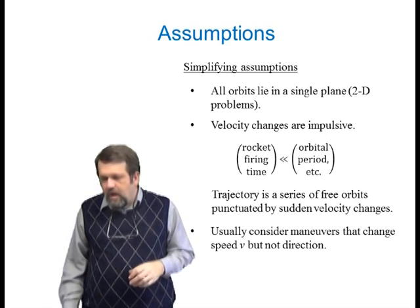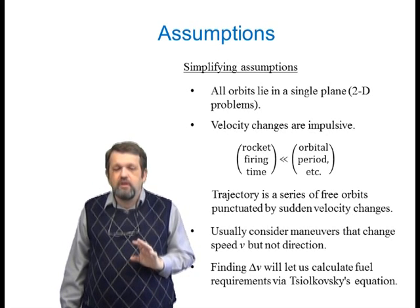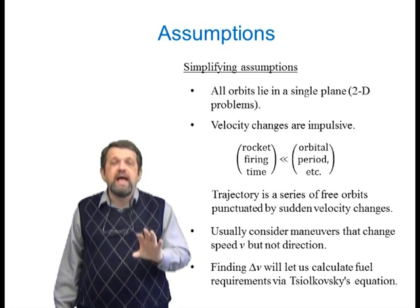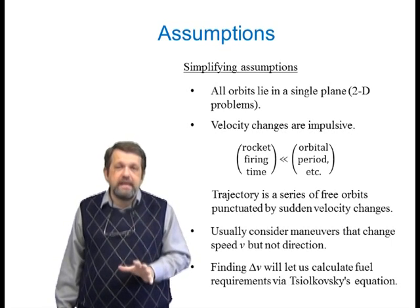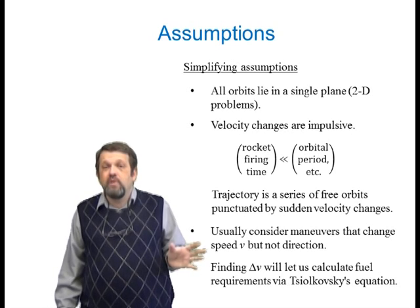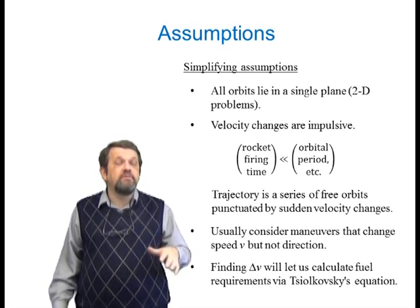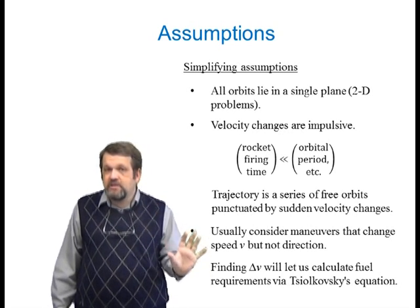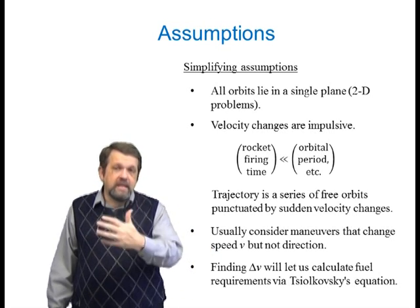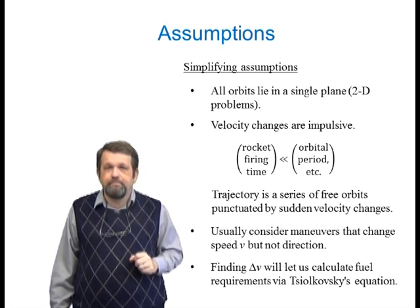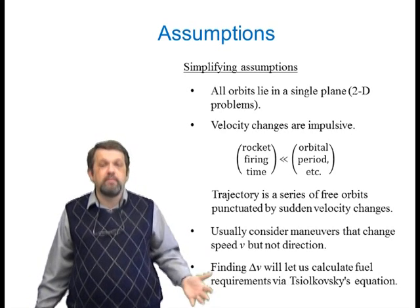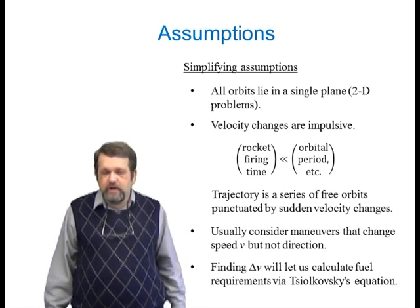In the end, we're going to want to find delta-V — how much we've changed our speed — because that change in speed relates to fuel consumption via Tsiolkovsky's equation, which relates delta-V to the mass ratio of the initial and final masses of the rocket vehicle. That's the number we need to figure out spacecraft requirements for certain orbit changes.